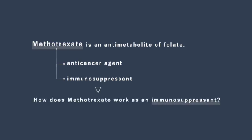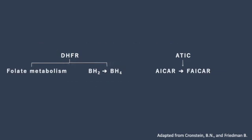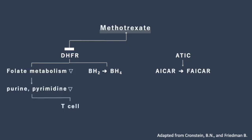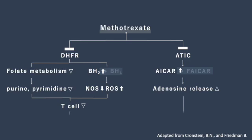It has been demonstrated that methotrexate affects DHFR and reduces the level of both purine and pyrimidine pools in primary human T-cells. It increases sensitivity of T-cells to apoptosis, thereby diminishing immune responses. Additionally, methotrexate inhibits ATIC, leading to increased adenosine conversion, triggering anti-inflammatory pathways.